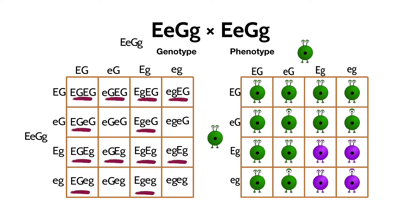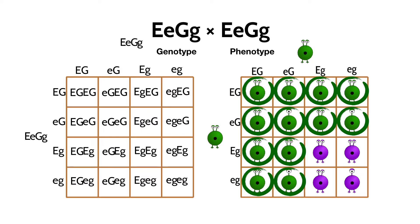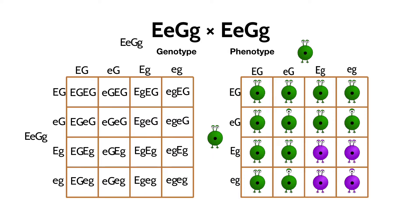Anytime there's a large E, the alien will have two eyes, and anytime there's a large G, the alien will be green. We end up with ratios that are very similar to the square we saw before. Three quarters green, one quarter purple, and three quarters two-eyed, one quarter one-eyed. Our double homozygous recessive, the one-eyed purple alien, only happens once out of 16 crosses on average.